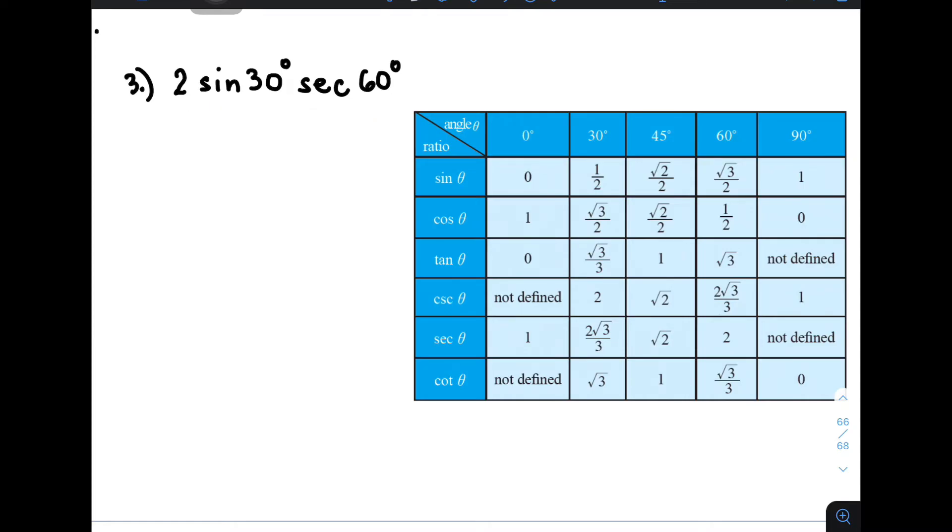First, we need to copy 2, and then the value of sine 30 degrees. So we have here sine 30 degrees, which is 1 half. So let's use parenthesis, 1 half. Again, this 1 half, it came from the value of sine 30 degrees.